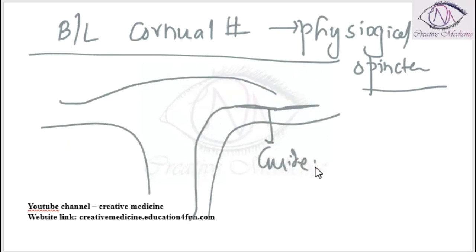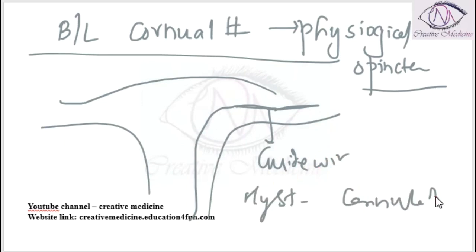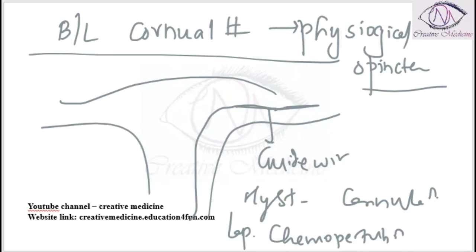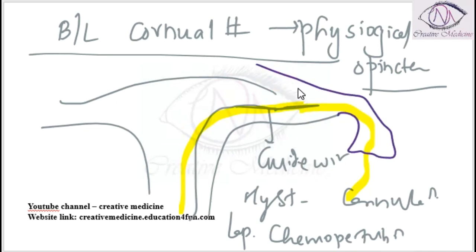This hysteroscopic cannulation is followed by laparoscopic perturbation, where you give a dye into the uterus and this dye passes through the fallopian tube. You can see the dye coming from the fimbria into the abdominal cavity, which is seen laparoscopically.